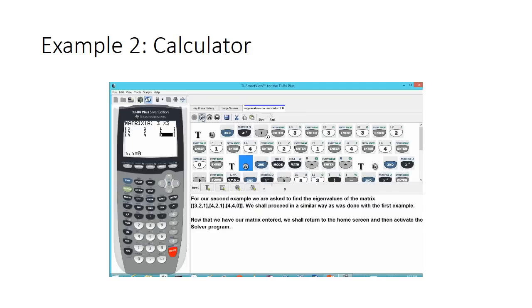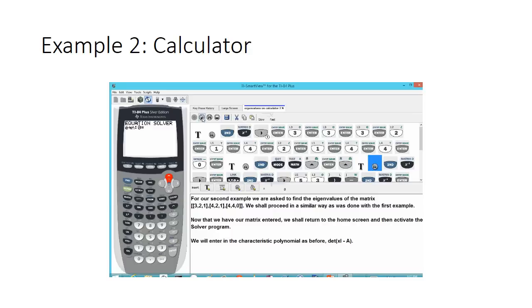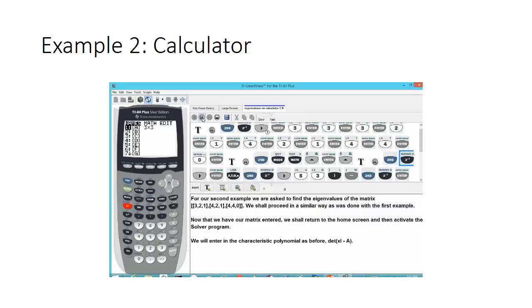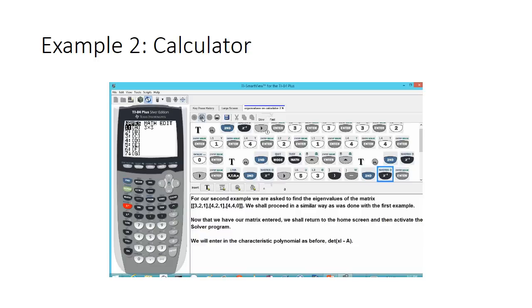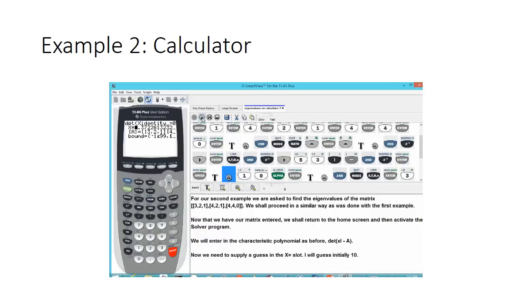Now that we have our matrix entered, we return to the home screen and activate the solver. We'll hit second and mode to quit, then hit math to go to the solver command. We enter the characteristic polynomial — the determinant of x times the identity minus A — going back under the matrix menu to find the determinant command, hitting the x variable, then the identity command for a 3 by 3 matrix, and then subtracting matrix A. We'll supply an initial guess of 10 and hit alpha and enter to solve.